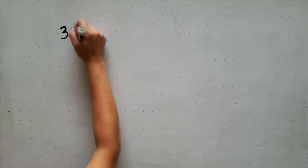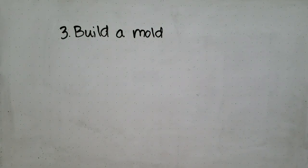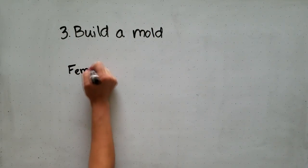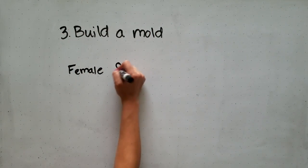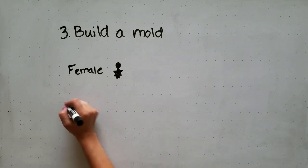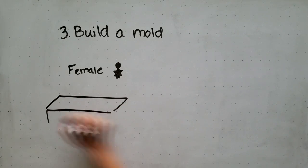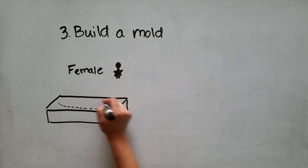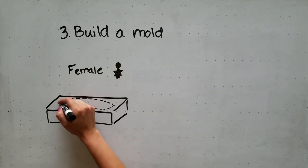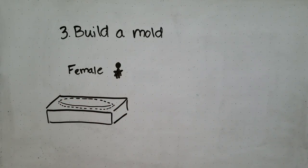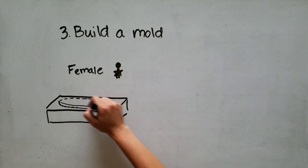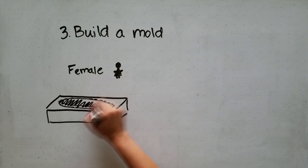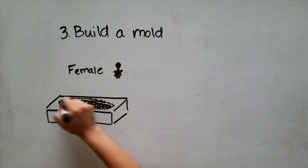Once you determine the overall geometry of the canoe, you have to build the mold. There are two types of molds you can build. With a female mold, you generally cut the shape of the canoe into a block and then fill that shape in with concrete, so the concrete surface against the mold becomes the outside of the canoe.